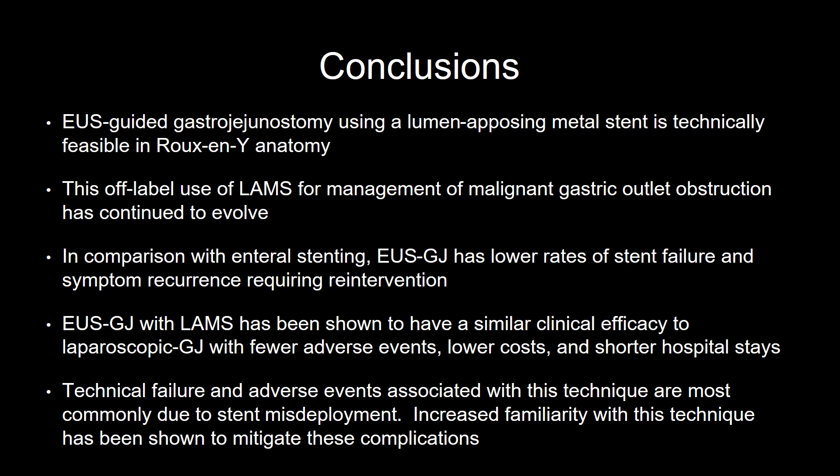EUS-guided gastrojejunostomy using a lumen-apposing metal stent is technically feasible in Roux-en-Y anatomy. This off-label use of LAMS for management of malignant gastric outlet obstruction has continued to evolve. In comparison with enteral stenting, EUS-GJ has lower rates of stent failure and symptom recurrence requiring re-intervention. EUS-GJ with LAMS has been shown to have similar clinical efficacy to laparoscopic gastrojejunostomy with fewer adverse events, lower costs, and shorter hospital stays. Technical failure and adverse events associated with this technique are most commonly due to stent misdeployment, and increased familiarity with the technique has been shown to mitigate these complications.